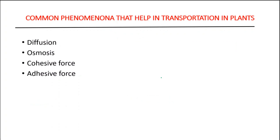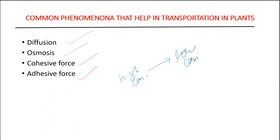There are different processes which are responsible for carrying out transportation in plants. First is diffusion, second is osmosis, third is cohesive force, and fourth is adhesive force. Diffusion simply means when any substance moves from a high concentration area to a low concentration area. In diffusion, both solute particles and solvent particles can move. It is simply a process of movement of the solute or solvent particle from a region of high concentration to the region of low concentration.